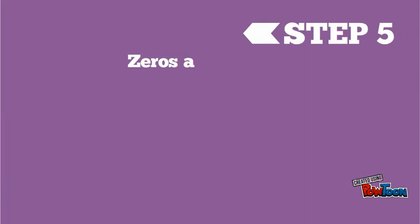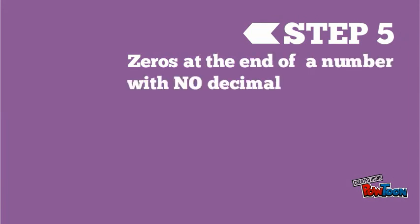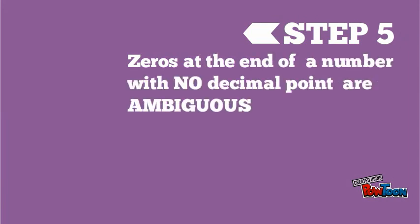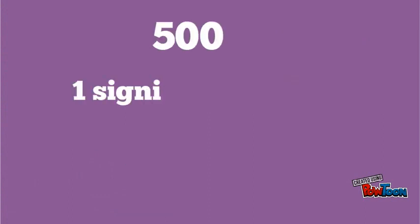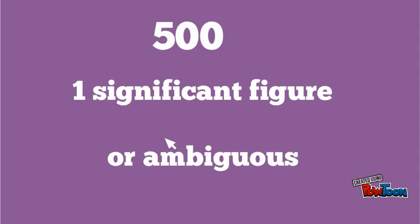The last rule is that zeros at the end of a number that contains no decimal point are ambiguous. If we have the number 500, we know for sure that the five is significant — that gives us one — but we don't know whether or not the two zeros are significant. So that gives us one significant figure, or we can just say that it's ambiguous.